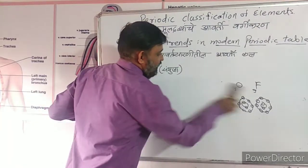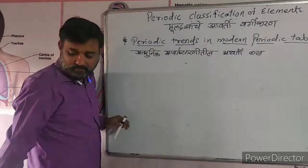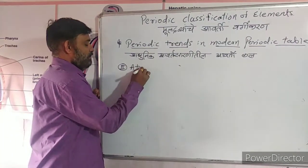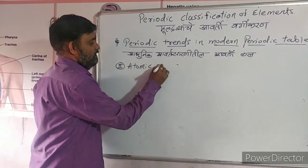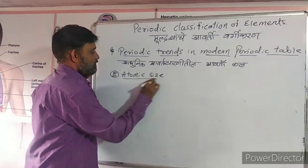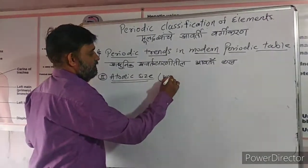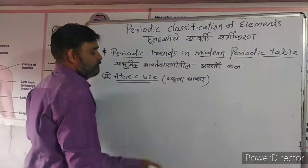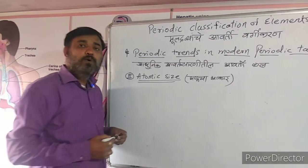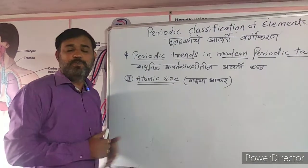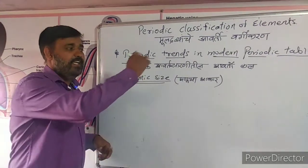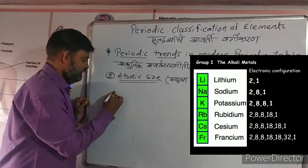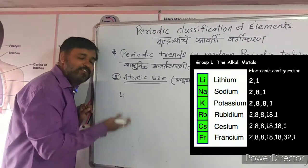Now the second point we have to learn is atomic size — the second periodic trend. Let's see how this changes in groups and periods. We'll take the example of Group 1 again: lithium, sodium, and potassium. These examples are quite familiar now.